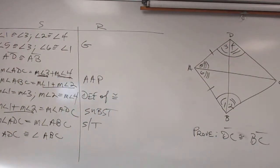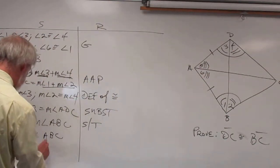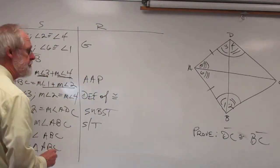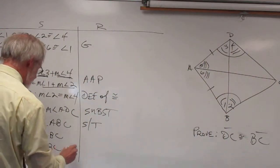And so I can now say triangle ADC is congruent to triangle ABC. And that would be because of angle side angle.